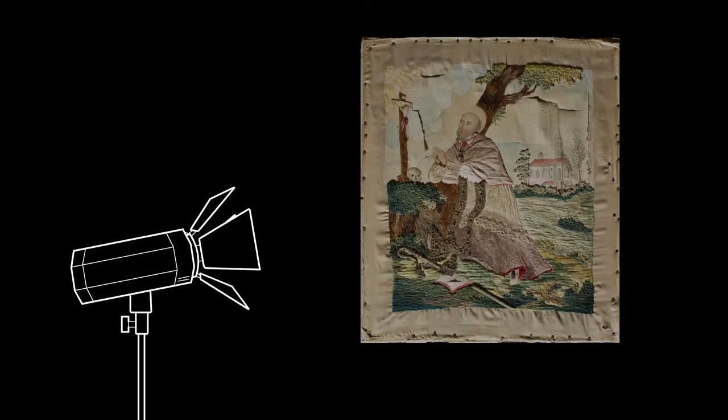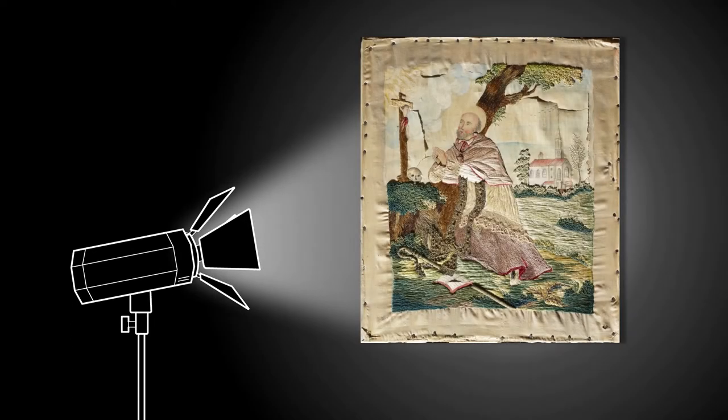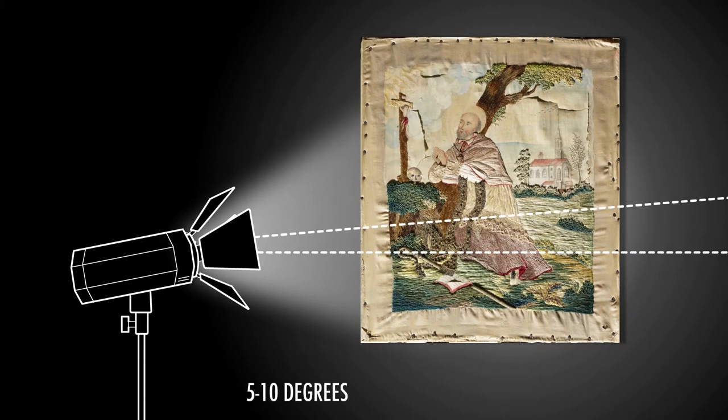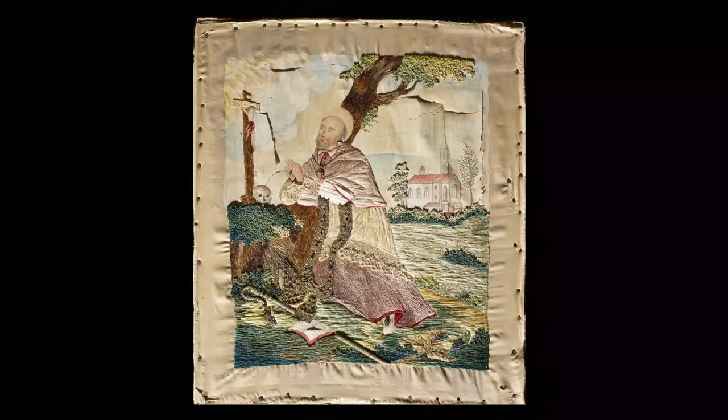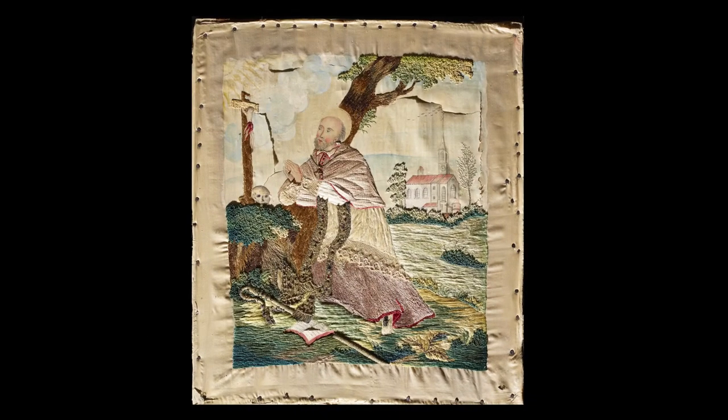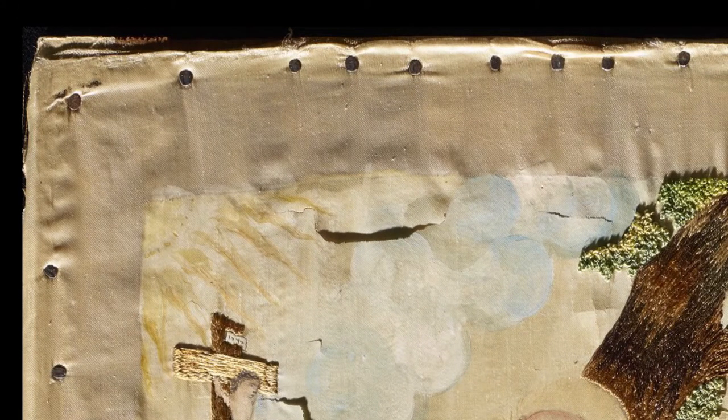Raking light accentuates the texture and surface damage. One light is placed at a low, 5 to 10 degree angle relative to the object's surface. In this example, we see tears and additional cockling in the canvas that are not revealed in normal or specular lighting.